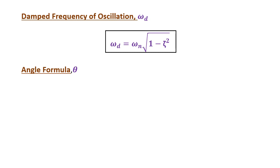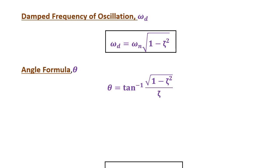Theta (θ) is another value incorporated in the time domain specification formulas. The formula is: θ = tan⁻¹(√(1 − ζ²) / ζ). While solving problems and using a calculator to find the value of θ, the calculator must be in radians mode only, as θ is in radians.